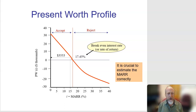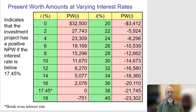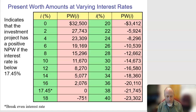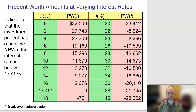We need to figure out what that MARR is. Here's a table of the previous plot — I calculated the project at different interest rates and found that at 17.45% the project is a break-even project. As long as the MARR is less than 17.45%, this is at least going to make money.